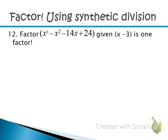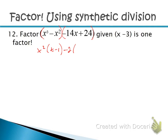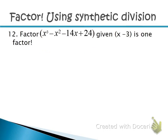How can this help us factor? Synthetic division — and long division too — can help us factor. For example, to factor x³ − x² − 14x + 24, there are four terms, so the only method we have is factor by grouping. Grouping gives x²(x − 1) and −2(7x − 12), but the parentheses aren't the same, so grouping won't work here. However, we've been told that one factor is x − 3, and with that, synthetic division can find the other factors.